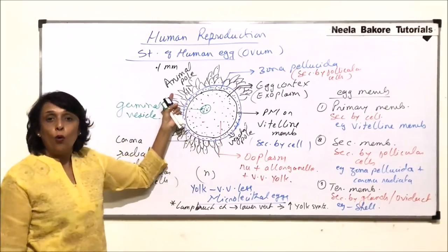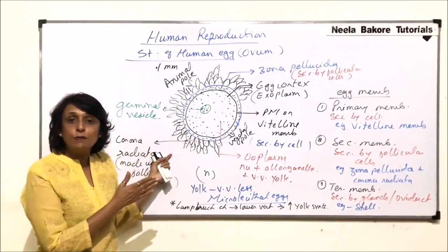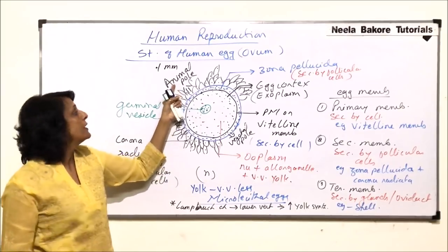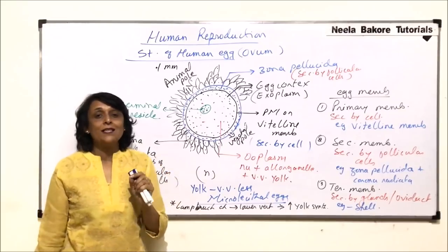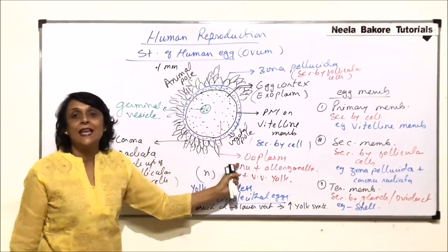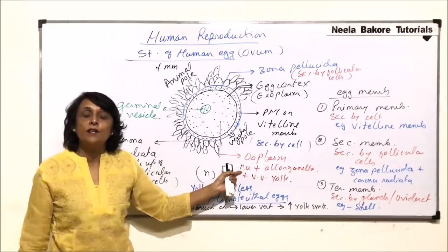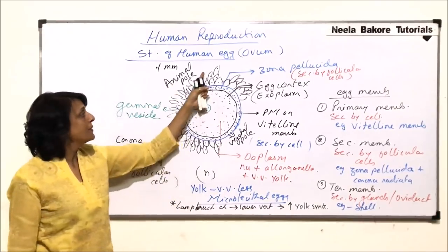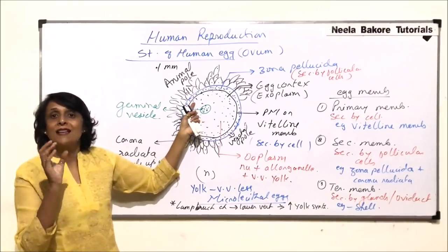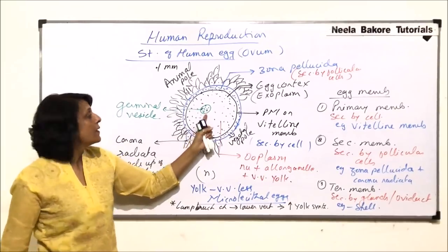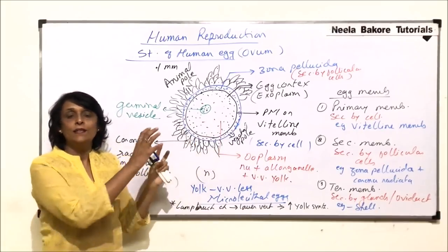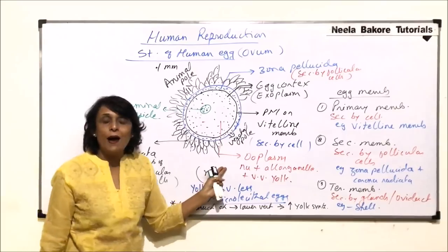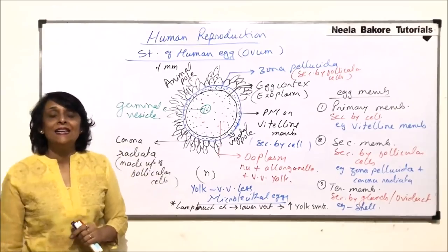To summarize the structure: the egg is spherical with two poles. The side where the nucleus is located is called the animal pole, and the significance is that sperm entry takes place through the animal pole. Additionally, the first cytokinesis after fertilization occurs on the same plane. The reason sperm enters from the animal pole is so that the sperm nucleus, which brings half the chromosomes, can fuse with the chromosomes of the ovum as soon as it enters. The next part will discuss different types of eggs seen in different animals.